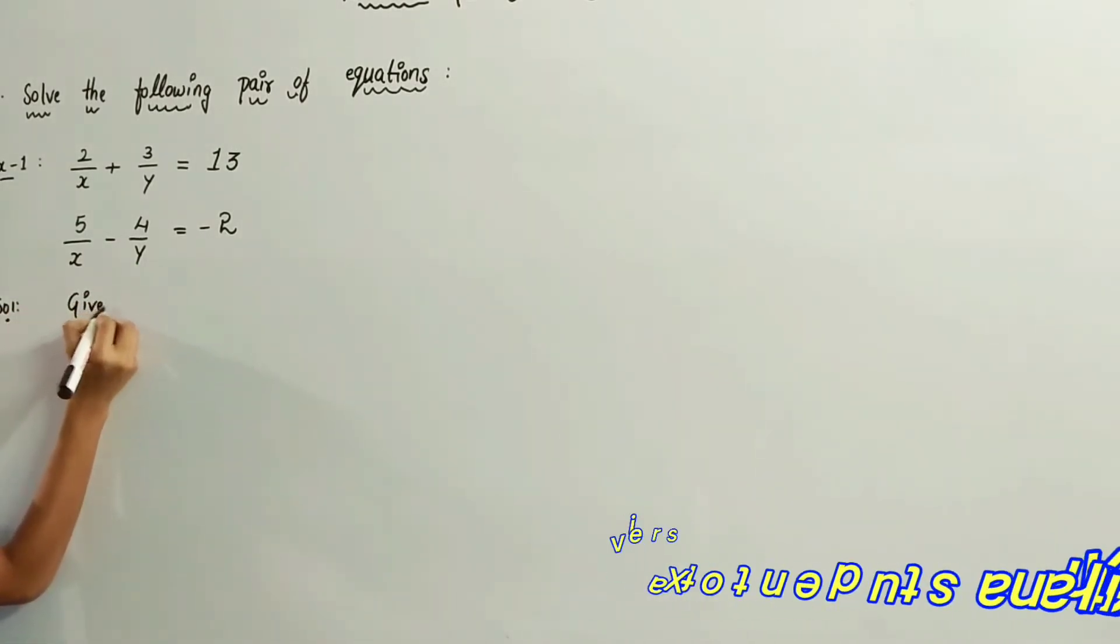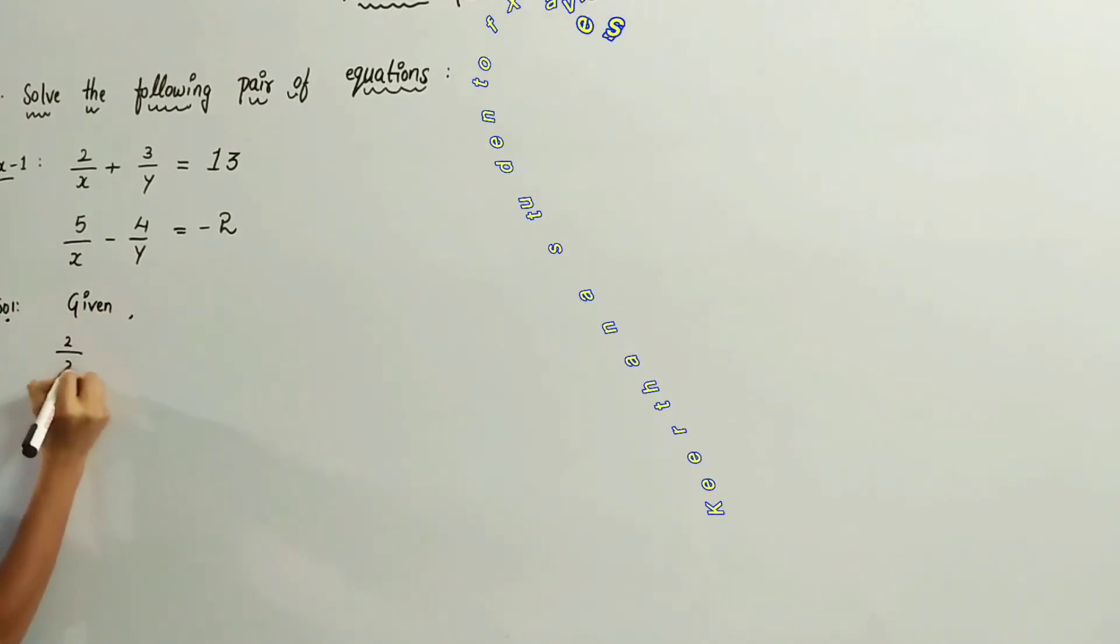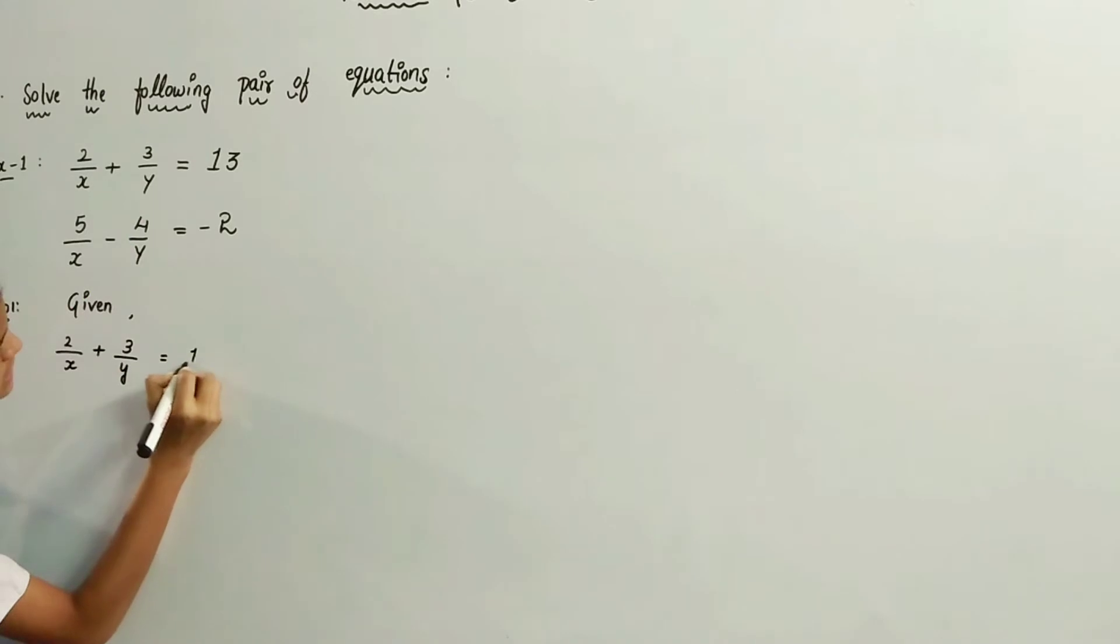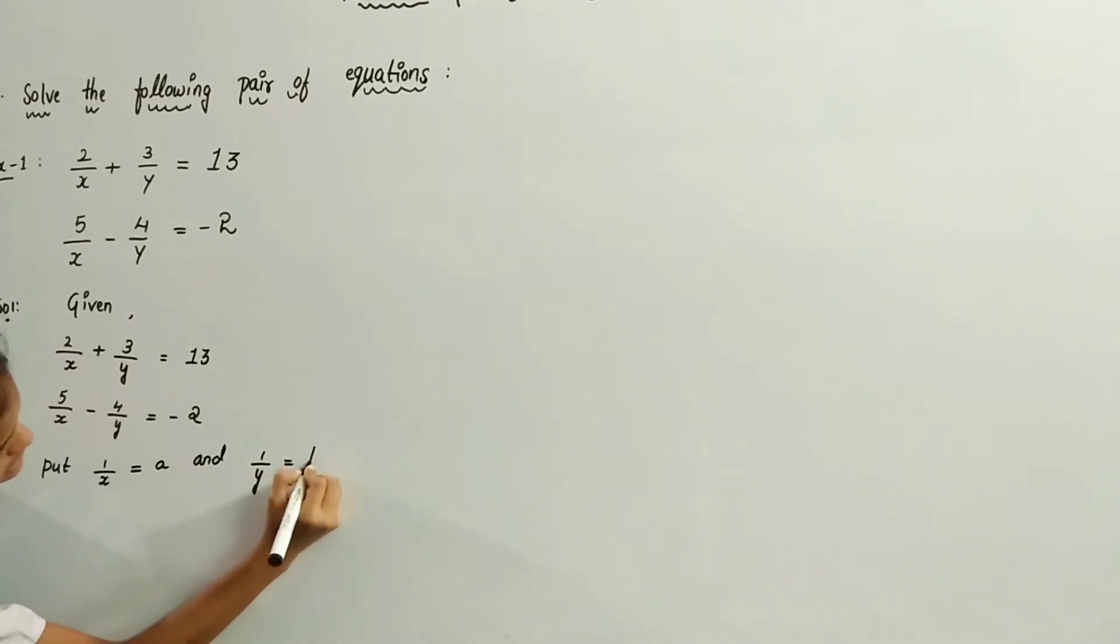Given, 2 by x plus 3 by y equals 13, and 5 by x minus 4 by y equals minus 2. Put 1 by x equals a and 1 by y equals b.